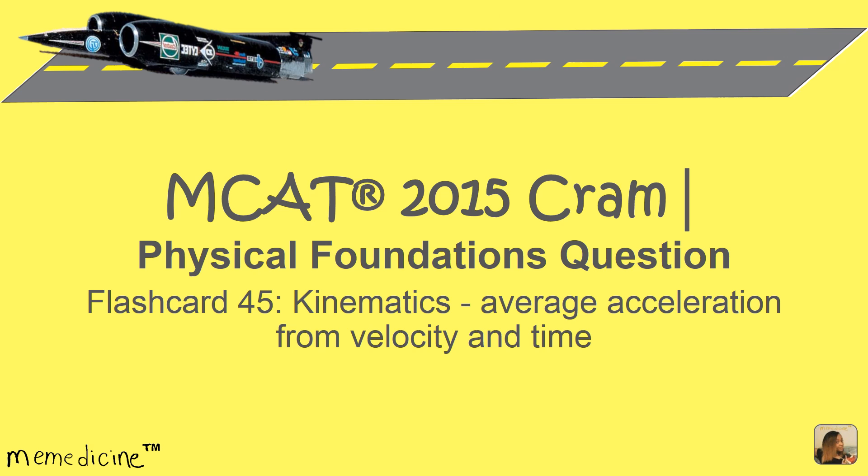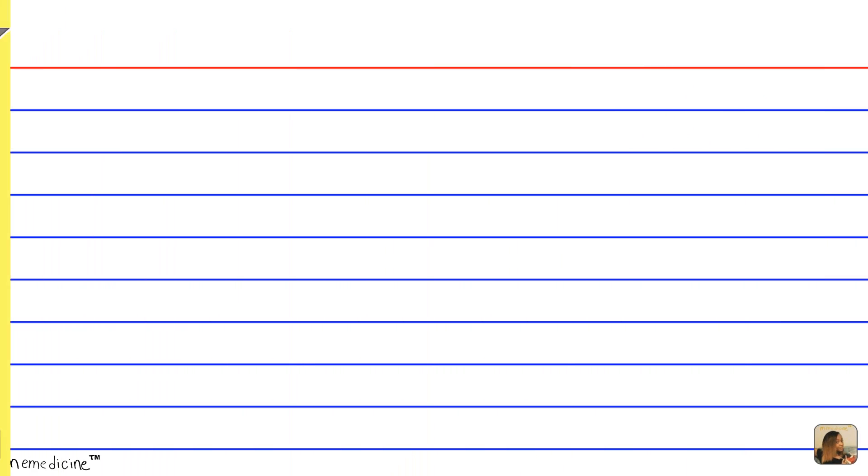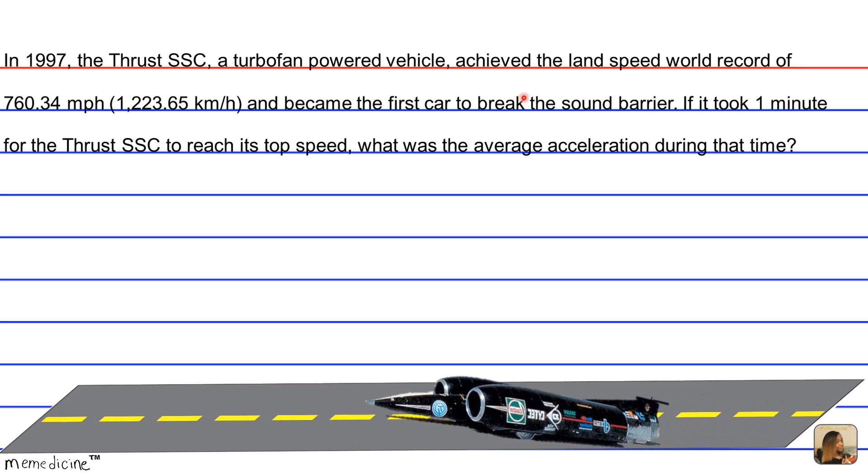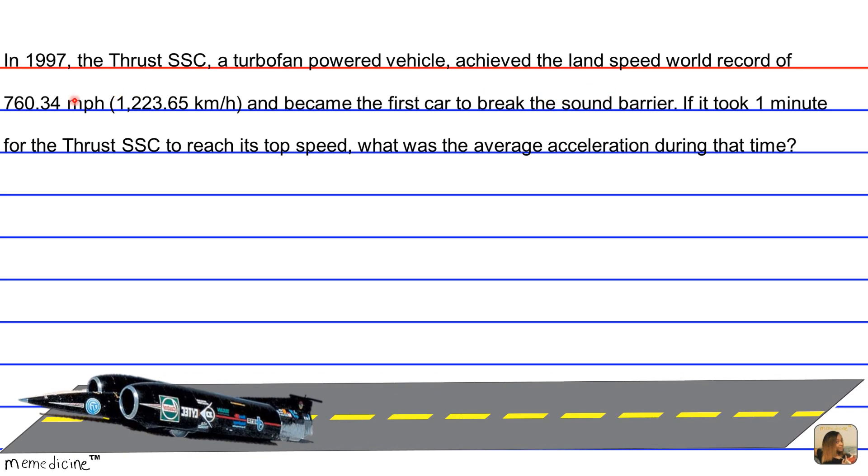All right, let's delve into the question. In 1997, the Thrust SSC, a turbofan-powered vehicle, achieved the land speed world record of 760.34 mph (1,223.65 km/h) and became the first car to break the sound barrier. If it took only one minute for the Thrust SSC to reach its top speed, what was the average acceleration during that time?